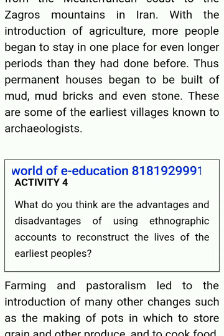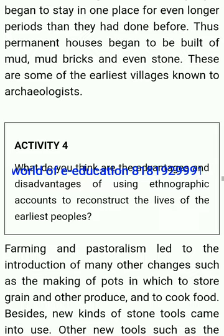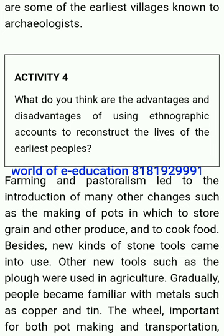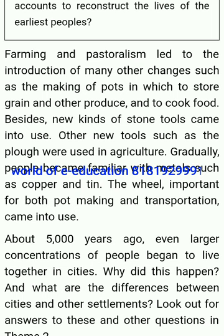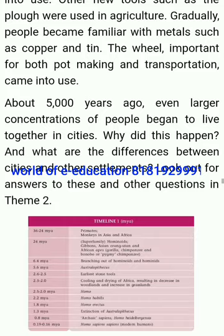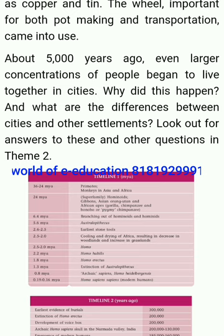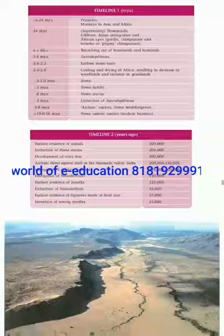With the introduction of agriculture, more people began to stay in one place for even longer periods than they had done before. Permanent houses began to be built of mud, mud bricks and even stone — these are some of the earliest villages known to archaeologists. Farming and pastoralism led to the introduction of many other changes, such as the making of pots to store grain and produce and to cook food. New kinds of stone tools came into use, and other new tools such as the plough were used in agriculture. Gradually, people became familiar with metals such as copper and tin. The wheel, important for both pot making and transportation, came into use. About 5,000 years ago, even larger concentrations of people began to live together in cities — look out for answers to what caused this and what the differences are between cities and other settlements in theme 2.